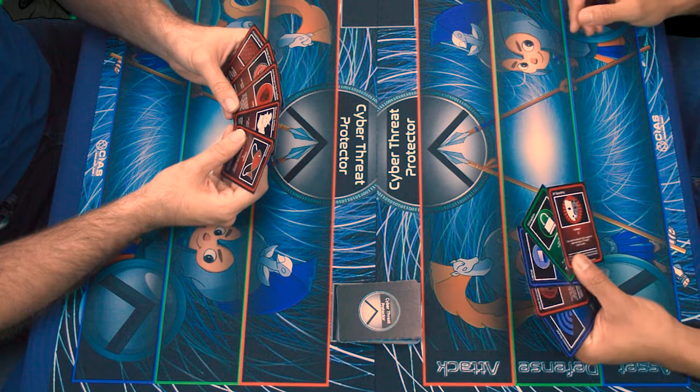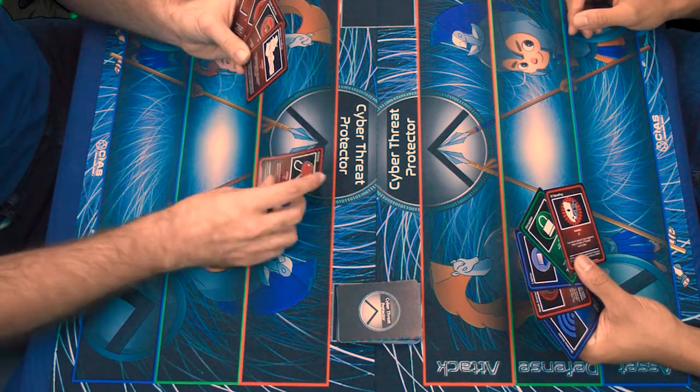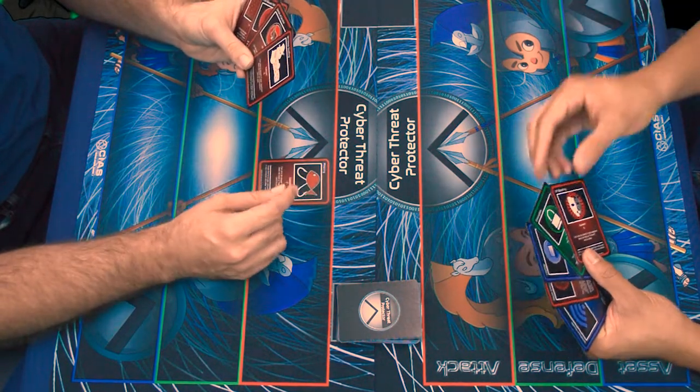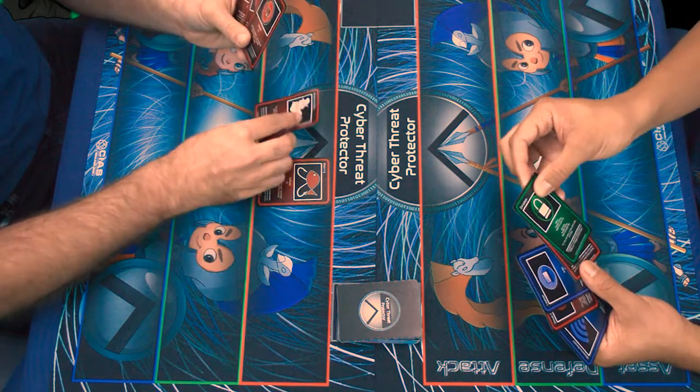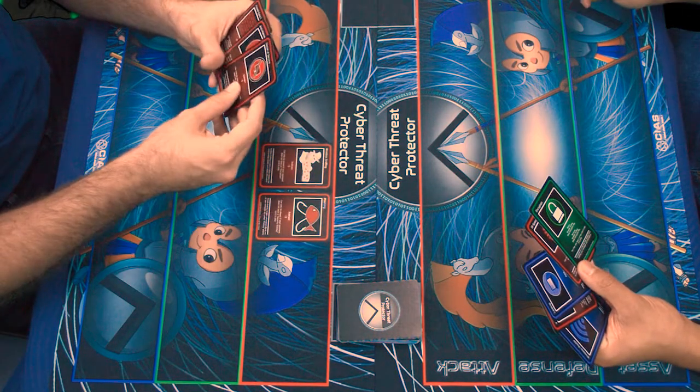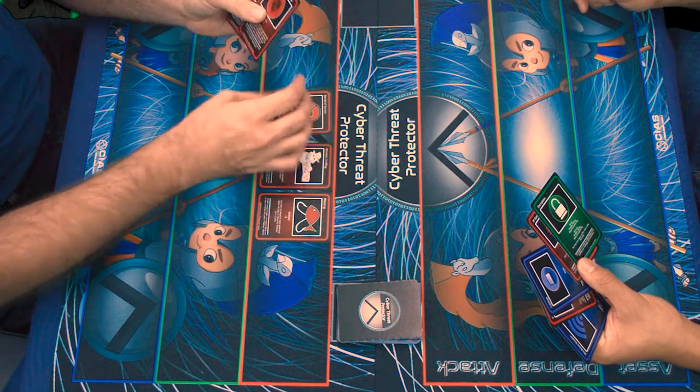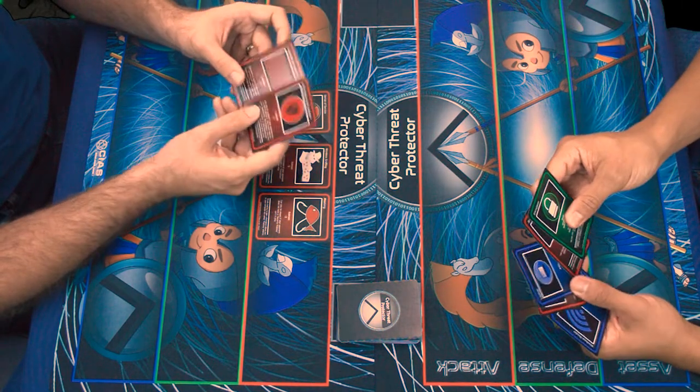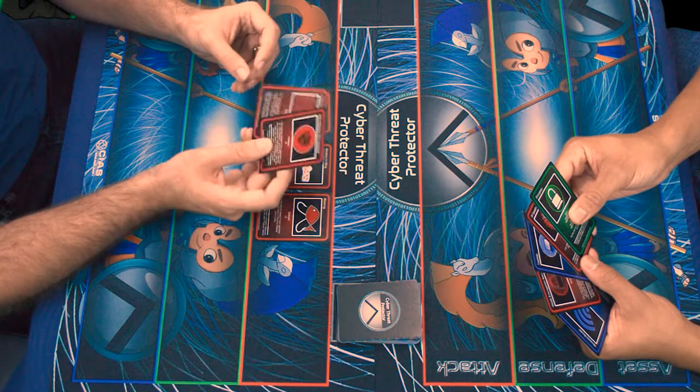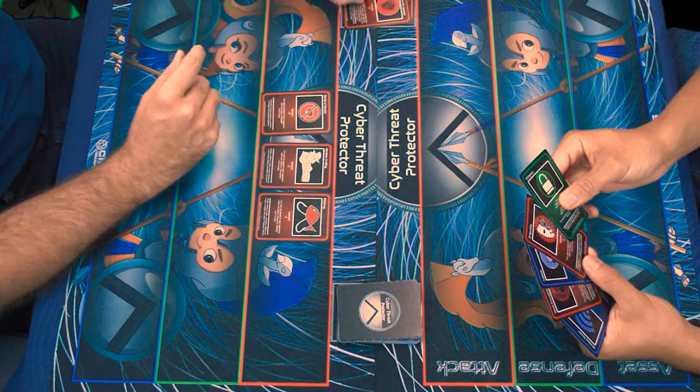And I only actually have three playable cards. So I'm going to do fishing because you don't have security training, wireless sniffing because you don't have encryption, and a denial of service because you don't have a firewall. And these last two cards I have, I can't play because you don't have a defense card that these remove. So that ends my turn.